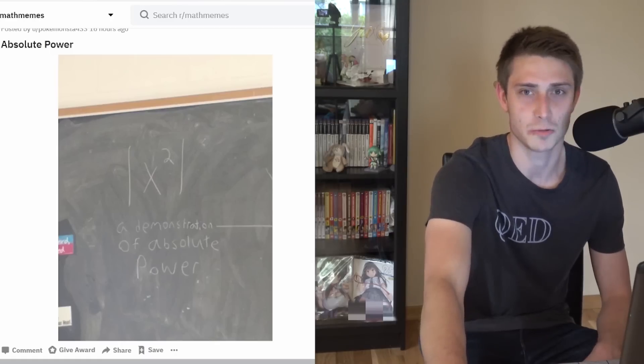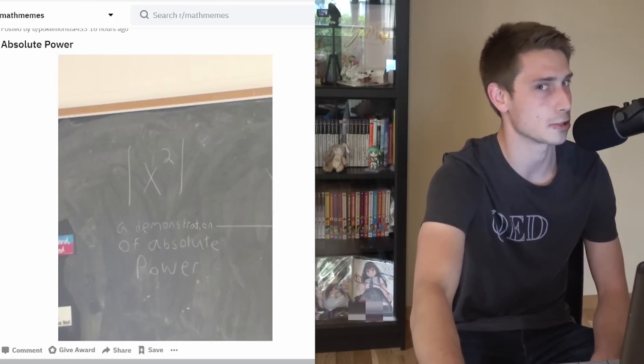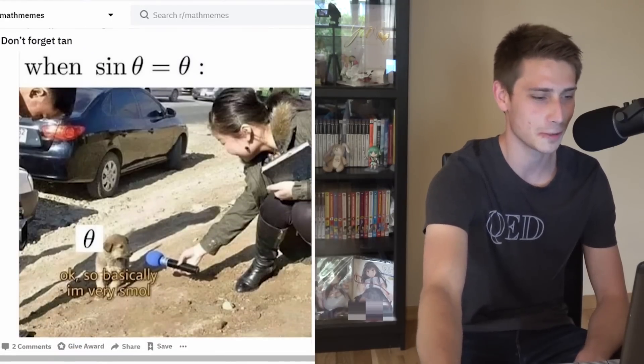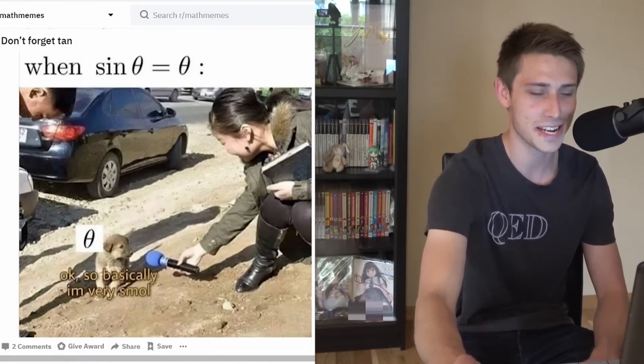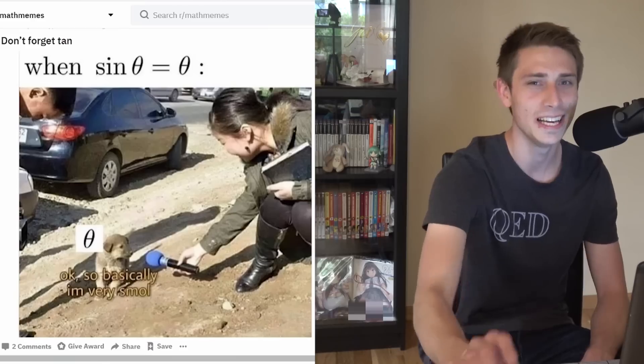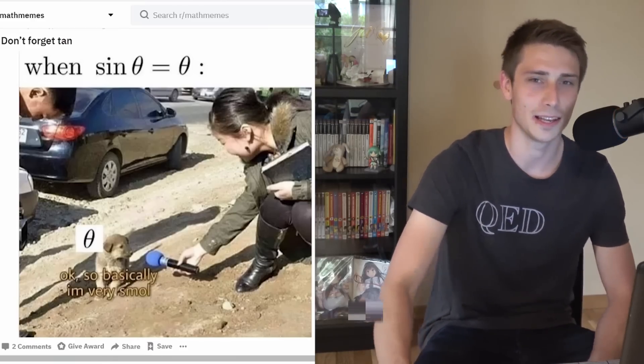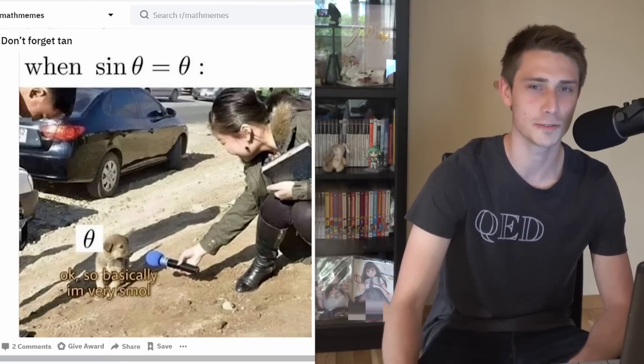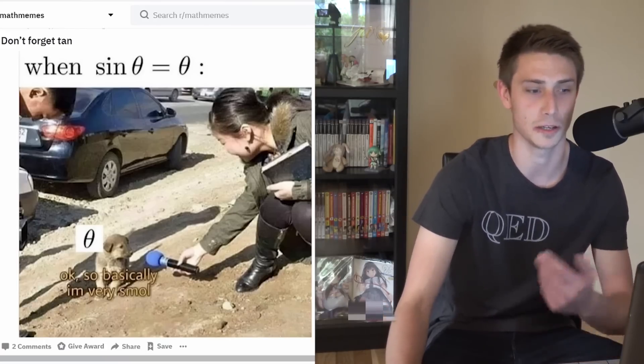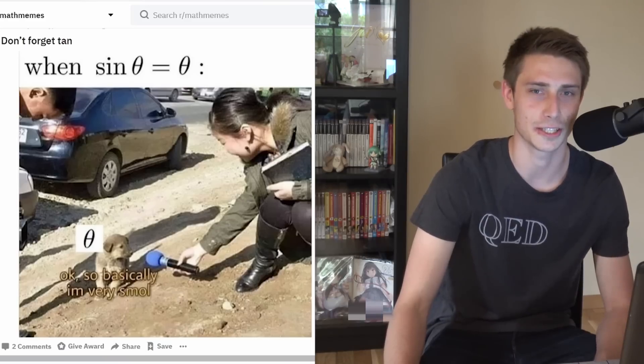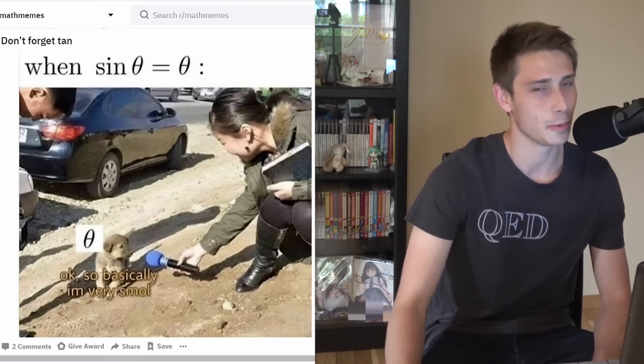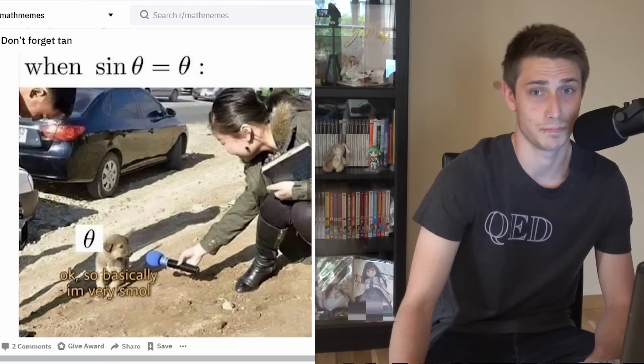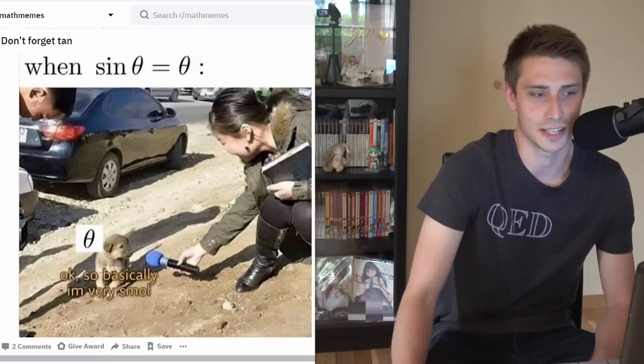When sine of theta is equal to theta. Basically I'm very small. That's a good one, that's a really cute one. And the OP says don't forget tangent, because tangent of theta is just theta if you do small angle approximations, or you just do it basically every time because who cares about small angles? Who needs trigonometric identities if you can just have first degree polynomials?